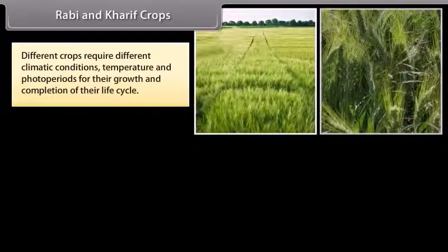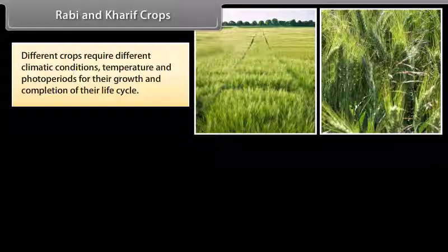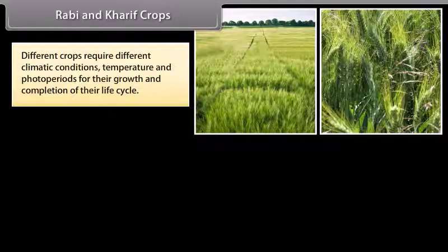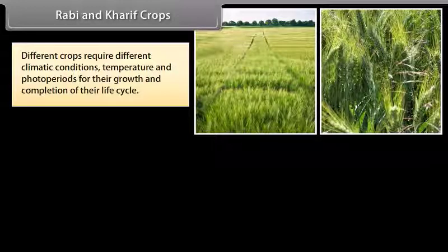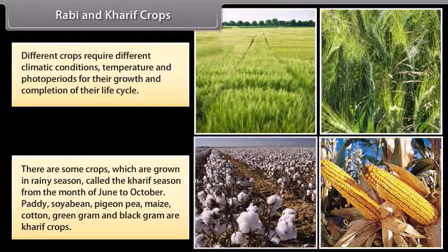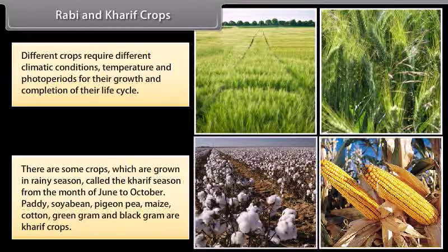Different crops require different climatic conditions, temperature and photoperiods for their growth and completion of their life cycle. Some crops are grown in the rainy season, called the Kharif season, from June to October. Paddy, soybean, pigeon pea, maize, cotton, green gram and black gram are Kharif crops.